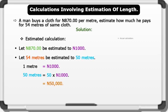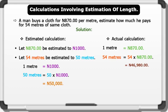Let's see the actual calculation. 1 meter equals 870 naira. 54 meters equals 54 times 870. This gives us an actual value of 46,980 naira.